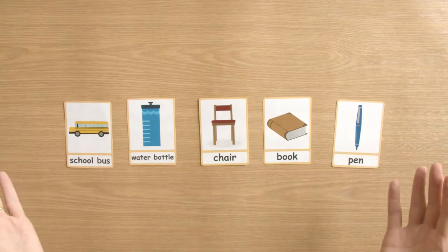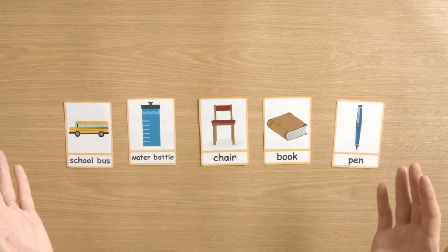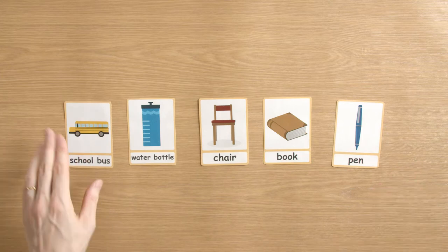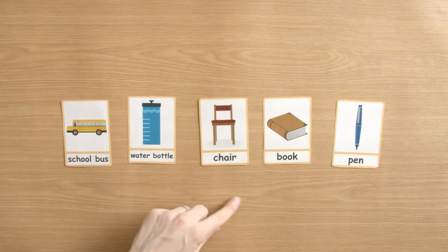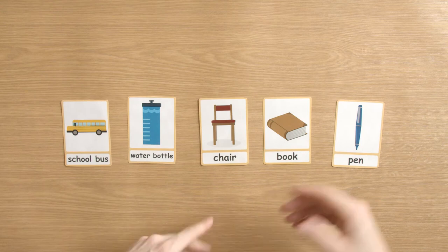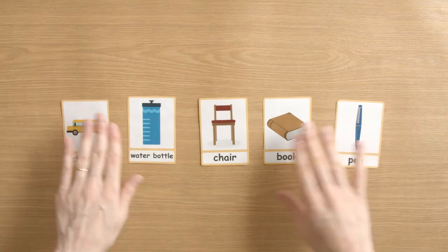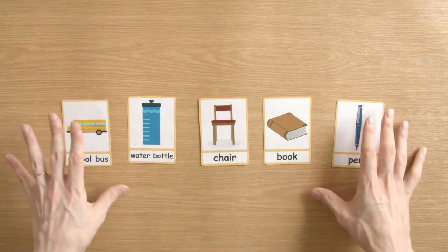So here is an example. You could do, it's a school bus, it's a water bottle, it's a chair, it's a book, it's a pen. Then you can flip these over, print another set out and play a matching game.